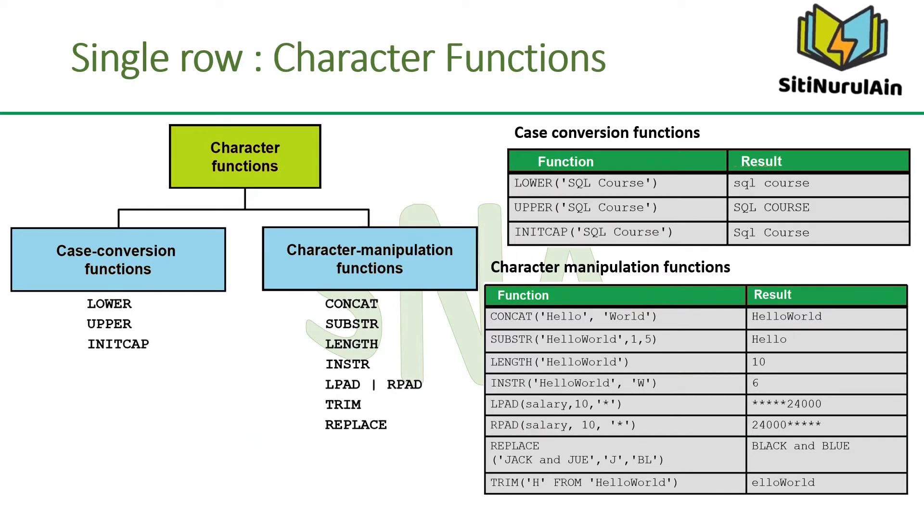Character functions can be categorized into two: case conversion functions and character manipulation functions. LOWER, UPPER, and INITCAP are three case conversion functions. LOWER converts mixed case or uppercase character strings to lowercase. UPPER converts mixed case or lowercase character strings to uppercase. INITCAP converts the first letter of each word to uppercase and the remaining letters to lowercase.